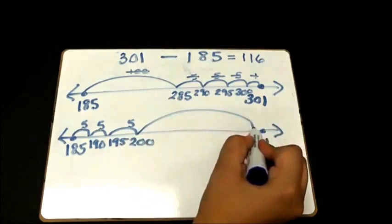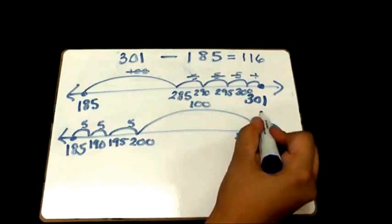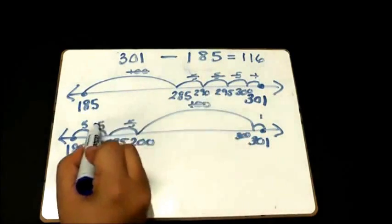they might be able to do that jump of 100 gets them to 300 and then a small jump of 1 and their answer is 100, 115, 116.